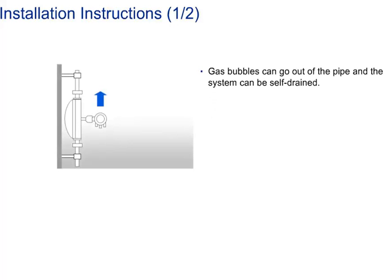The optimal installation orientation is a vertical installation with upward flow. Gas bubbles can escape from the meter and pipework, and the system is inherently self-draining.